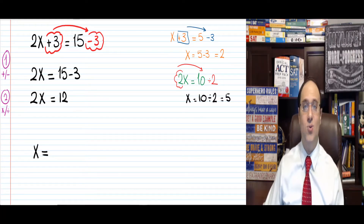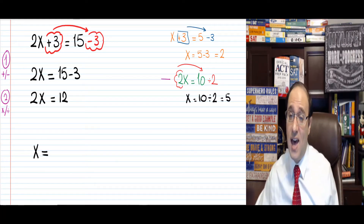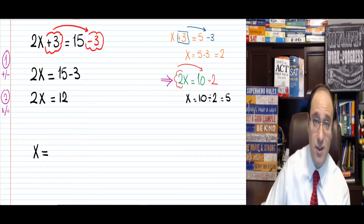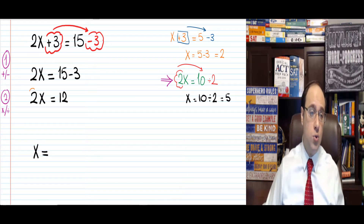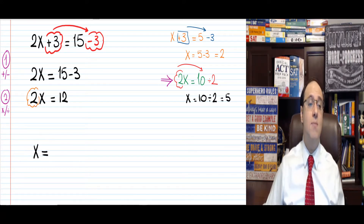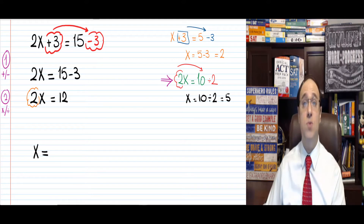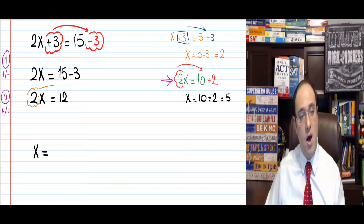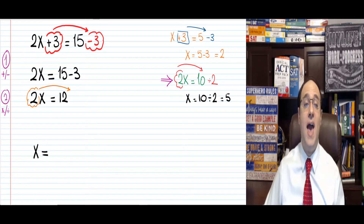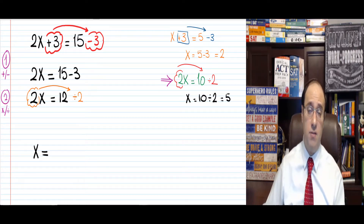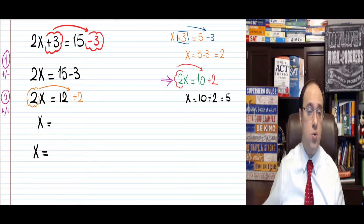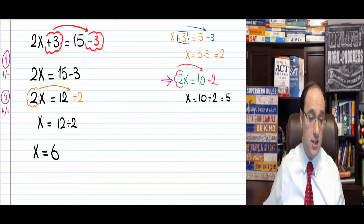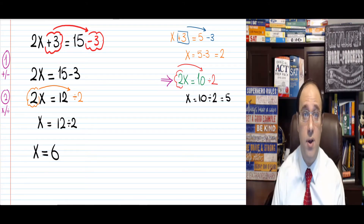Here I have 2x equals 12, just like before I had 2x equals 10. Now let's take a look. I want to get rid of the 2. 2x means 2 times x, which means x times 2, so it goes to the other side of the equal sign as divided by 2. The opposite of multiplication is division. So we can rewrite this as x equals 12 divided by 2. x equals 6. That is your final answer.